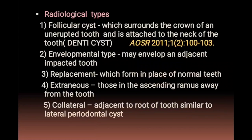OKC has several radiological types: follicular type surrounds the crown of an unerupted tooth attached to the tooth neck, also known as a dentigerous cyst. The envelopmental type may envelop an adjacent impacted tooth. The replacement type forms in place of normal teeth. The extraneous type is in the ascending ramus away from the tooth, and the collateral type is adjacent to the root of the tooth, similar to a lateral periodontal cyst.